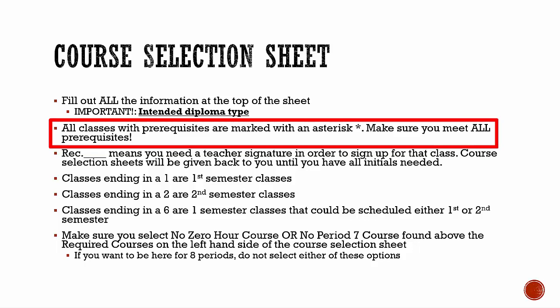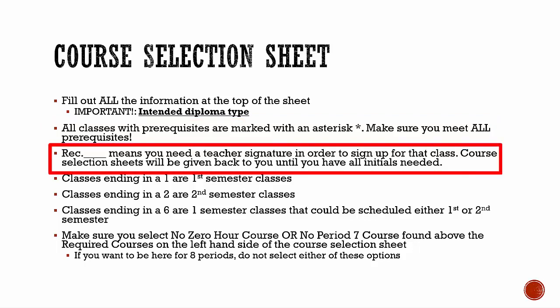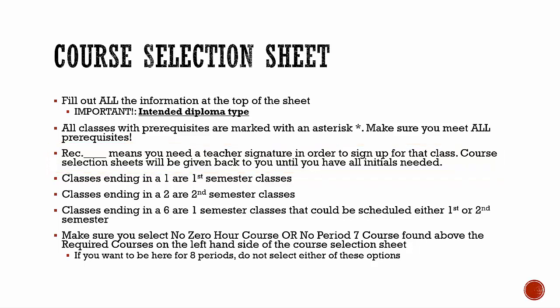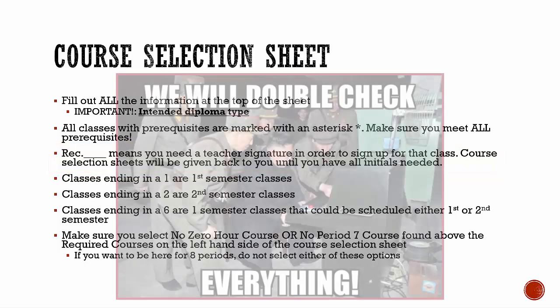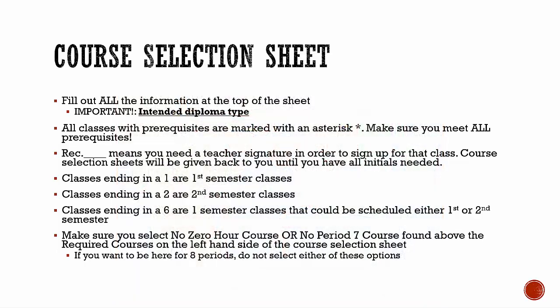When choosing courses, keep in mind that some courses require an application, audition, and/or recommendation. Your course selection sheet will denote when any of those are required. Your counselor does check these, and if you do not have the requirements, your counselor will remove the course from your course selections and replace it with another elective.